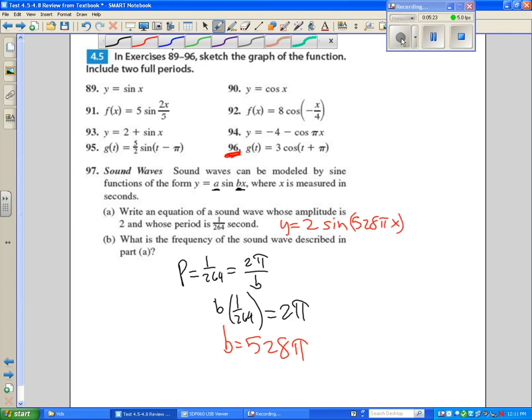What is the frequency of the sound wave? The frequency is the reciprocal of the period, so this is 264 hertz, because this is in a second, and this is 264 oscillations per second.